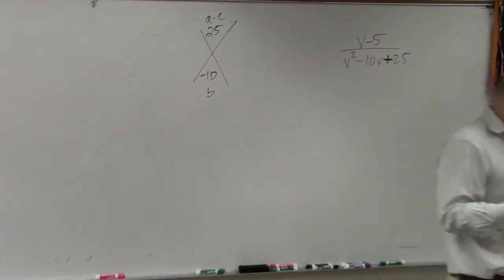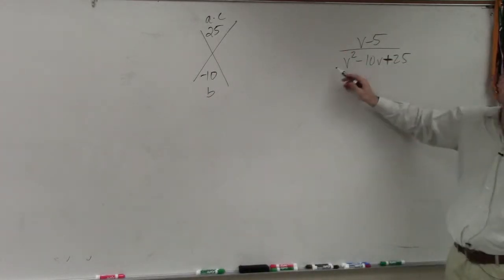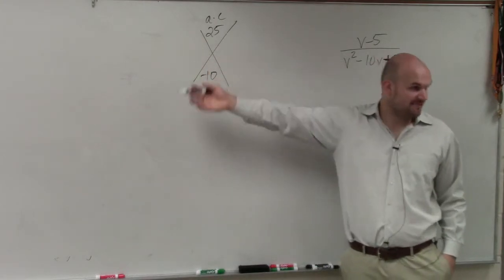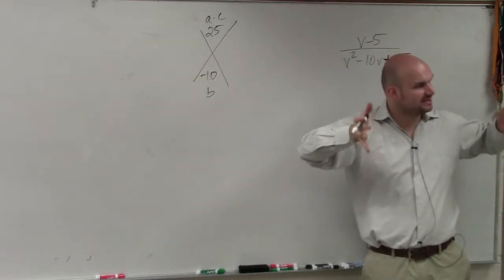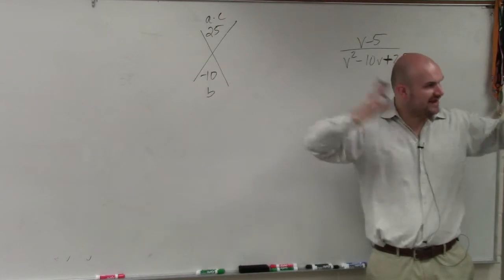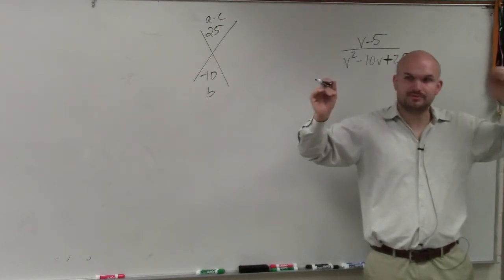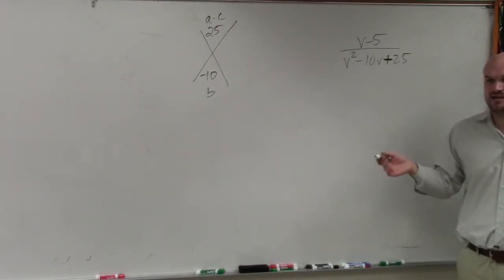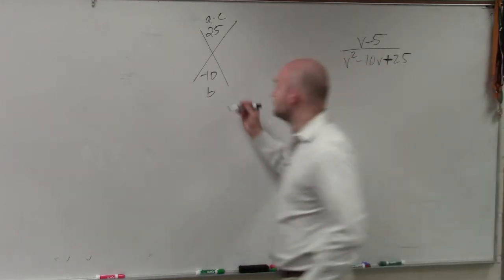Now what's nice about factoring it this way is, remember, a in this case is 1. So I can just use my factors or my terms as my factors. I don't have to use the box method, which we did before, where you're trying to factor it out again. So I just need to determine what two numbers multiply to give me 25, but then add to give me negative 10. Negative 5 and negative 5.